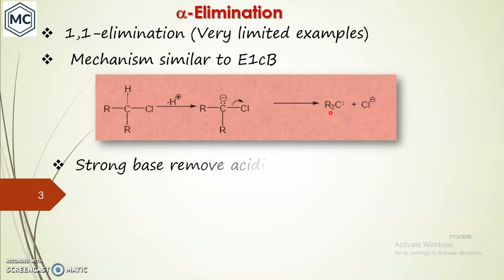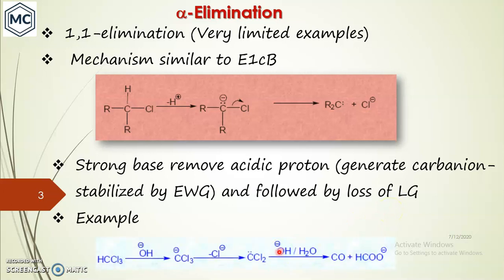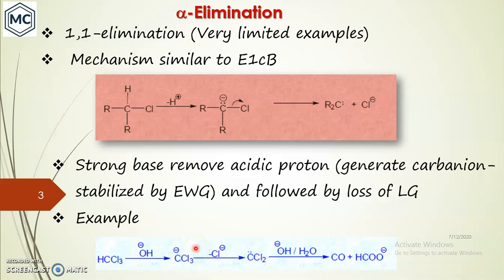A very strong base is required to strip the proton and generate a carbanion, which is stabilized by an electron-withdrawing group, followed by loss of the leaving group. Another example is chloroform in the presence of a strong base: it forms a carbanion — trichlorocarbanion first — then one chlorine is lost and dichlorocarbene is formed. On hydrolysis, you get formate. So this is an example of alpha elimination.